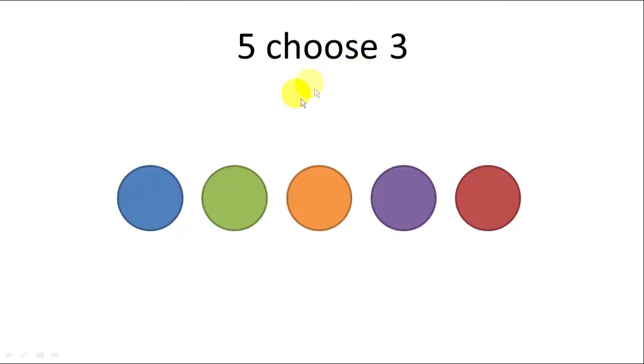So in a five choose three problem you might have five different circles and you need to choose three of those. We don't care about order, you just have to choose three and we want to find out how many different possible color combinations there are. So blue green orange, orange purple red, those are two different possible combinations. That is a common n choose k problem.